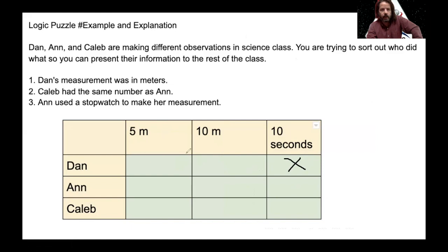Caleb had the same numbers as Ann. Well, that meant that Dan was the only one who did not have the same number as anybody else, which meant he had to have 5. So I could know that right away.